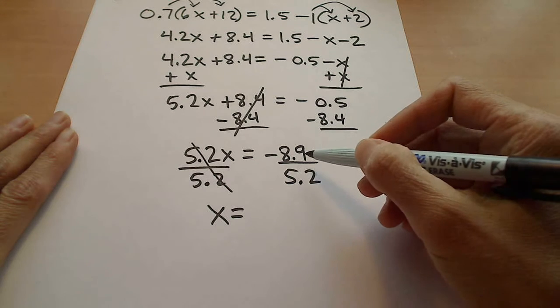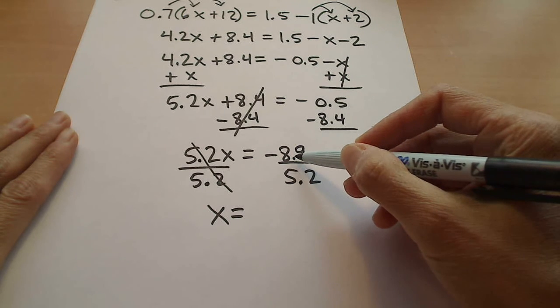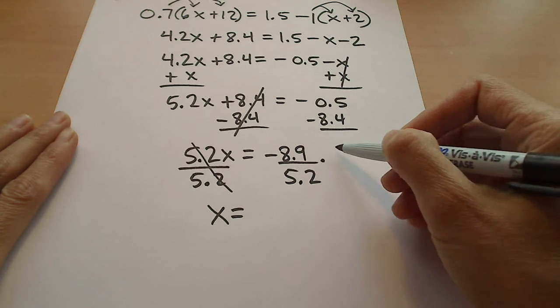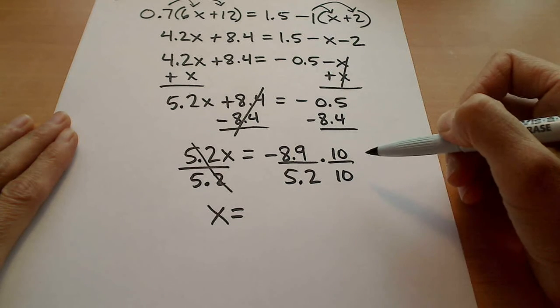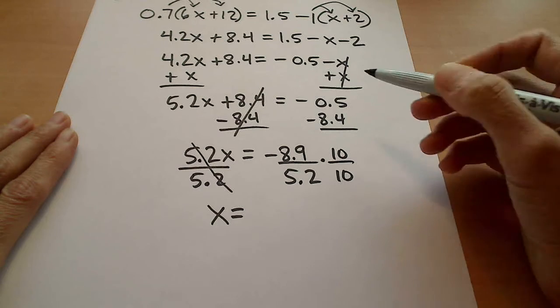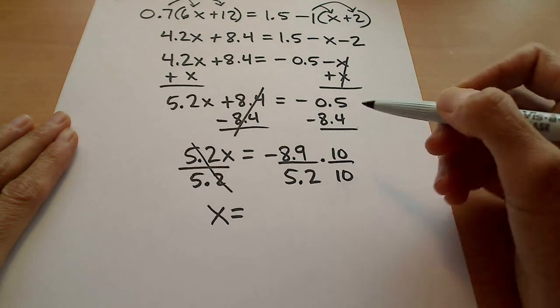So if I want to move the decimal place one position, then that would be multiplying by 10 over 10. Recognize that 10 over 10 is the equivalent to 1, and so if I do this, then...